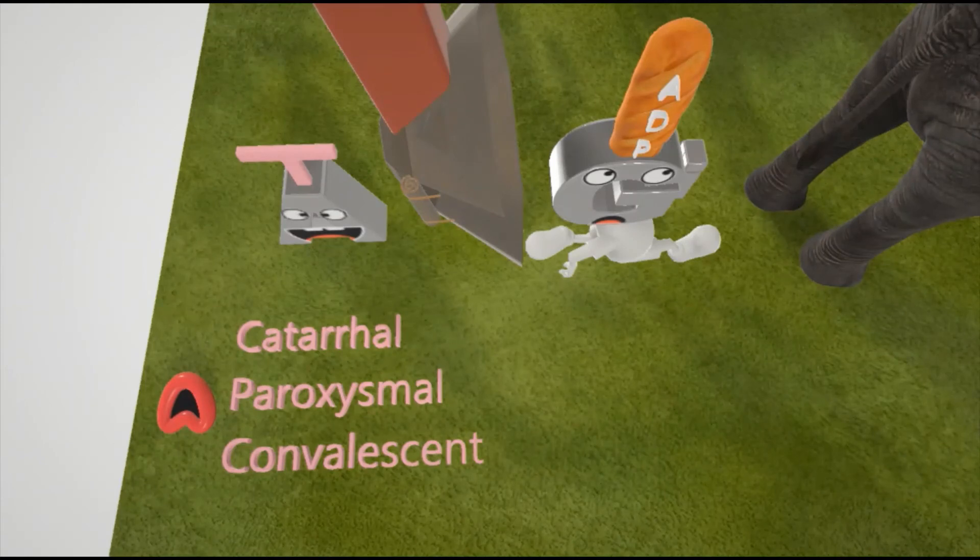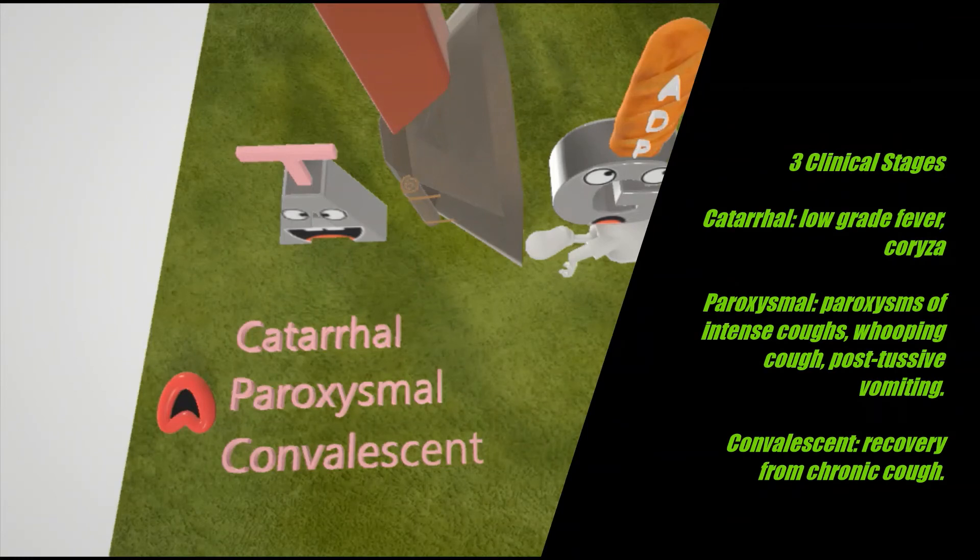The silly A guy here was having a little bit of fun, and he wrote this stuff in the grass over here. And this is going to help us remember the three clinical stages of Bordetella pertussis infection. First is the catarrhal stage, represented by low-grade fevers. That's why you have this random thermometer coming down from this guy, and coryza. C for coryza, right? So C has catarrhal and C for coryza.